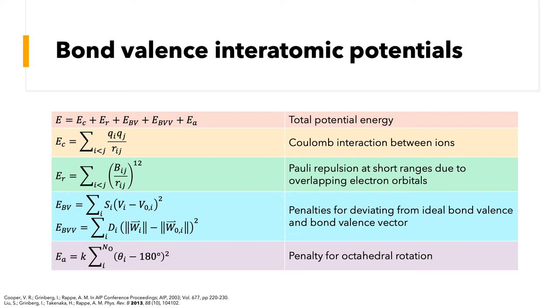The bond valence penalty function is the sum of the square deviations of the instantaneous valence of the i-th cation from its ideal valence. For example, remember that the titanium valence in BTO is 3.6, but should be 4, multiplied by a penalty scaling factor that depends on the cation. In other words, S sub i is different for barium, strontium, and titanium. The only difference between the bond valence and the bond valence vector energy penalties is that we first take the magnitude of the bond valence vectors before calculating their deviations from ideality, vector W sub nought i, which is a fitted value.